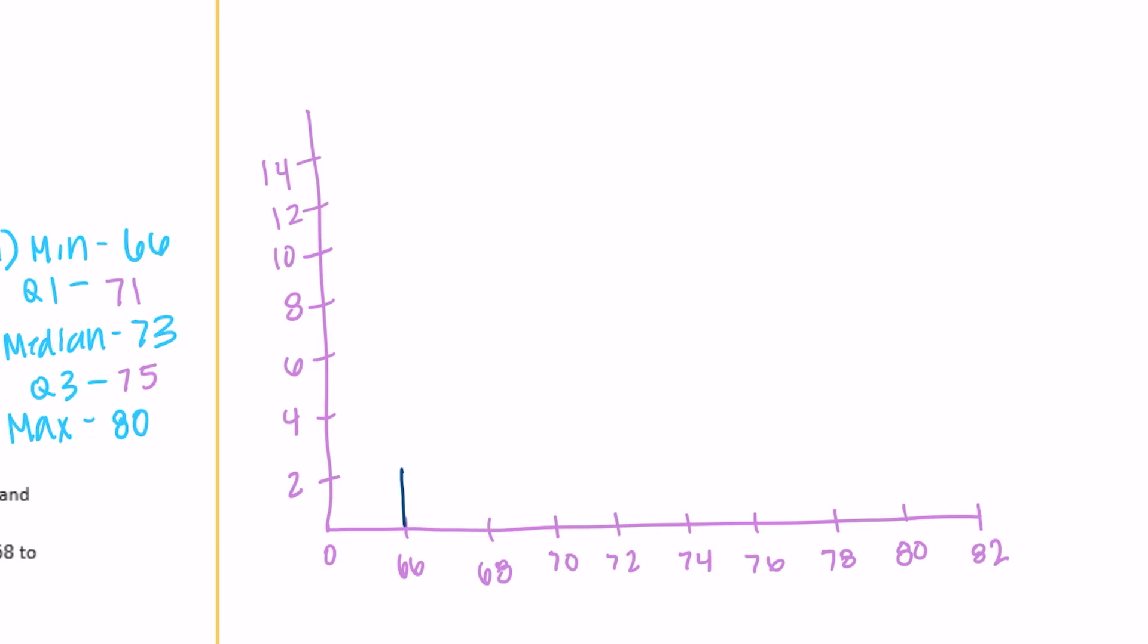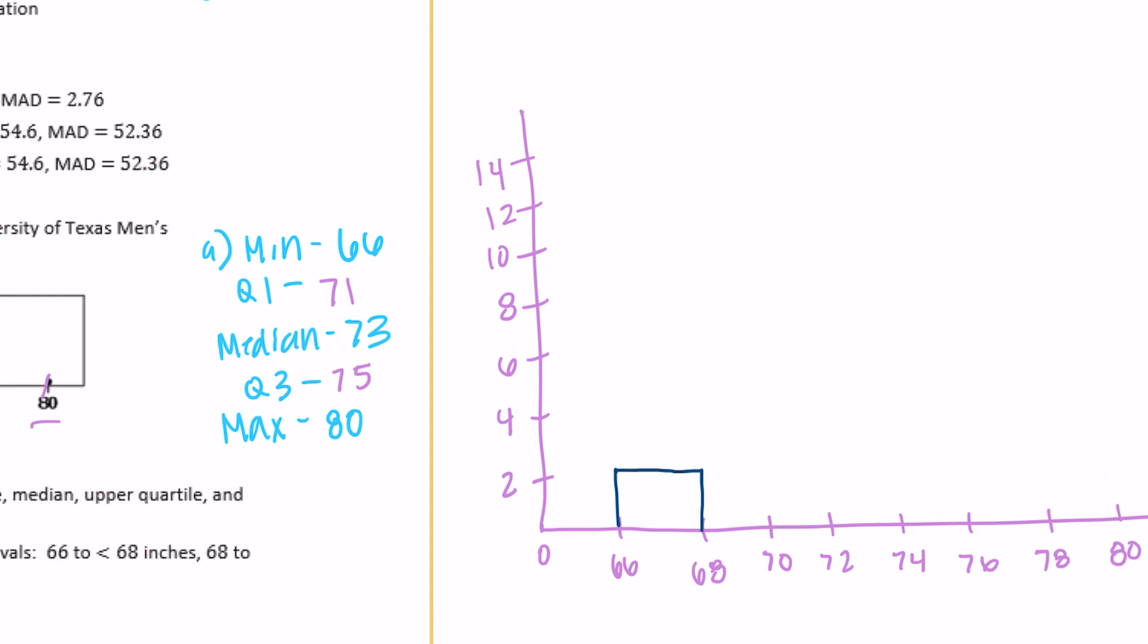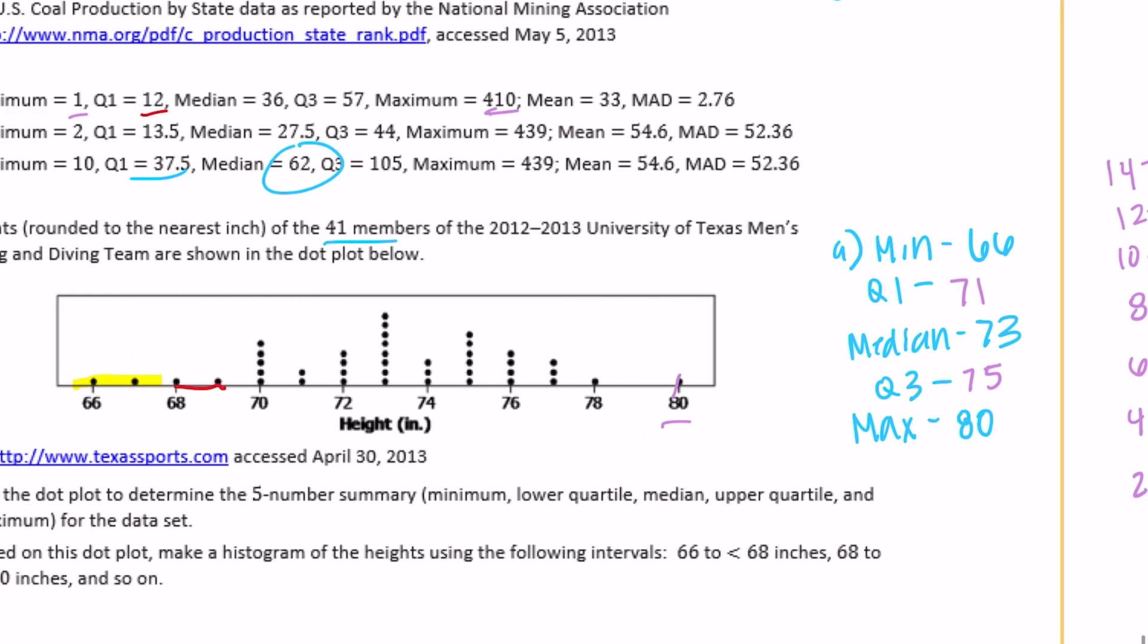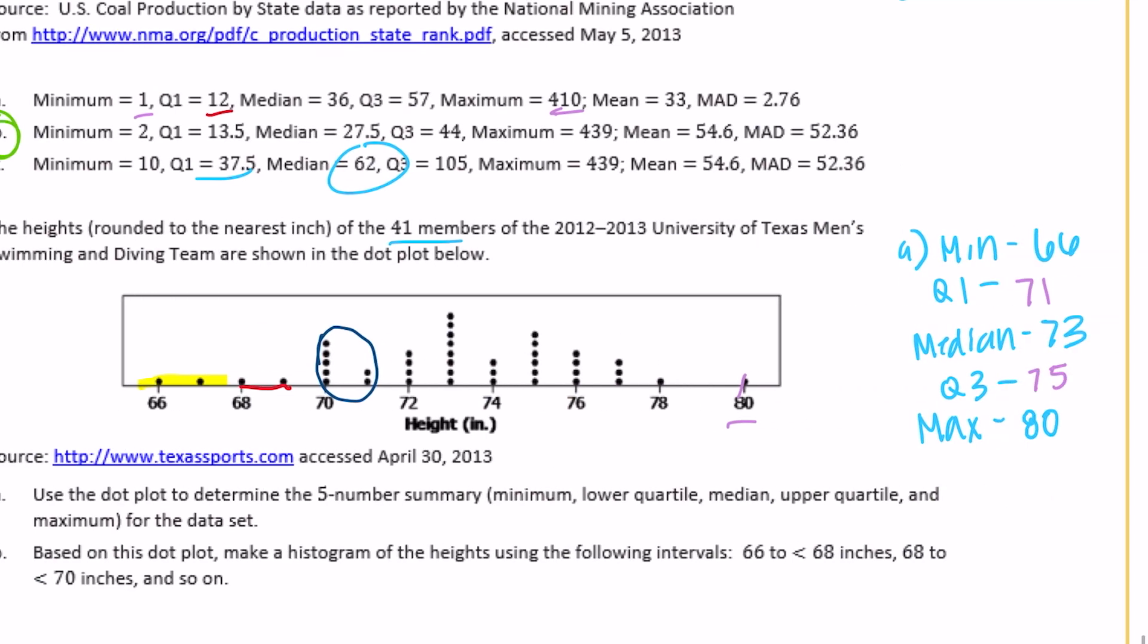I'm going to draw it up to 2. From 68 to less than 70, from here to here we have 1 on 68 and 1 on 69, so it's going to stay consistent. Between 70 and 72 we have 1, 2, 3, 4, 5, 6, 7, so we're going to take it up to about there. Between 72 and 74, so 72 and 73, we have this big group: 1, 2, 3, 4, 5, 6, 7, 8, 9, 10, 11, 12. So all the way up, take it all the way up to 12.